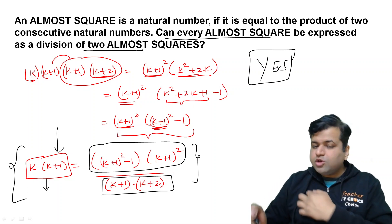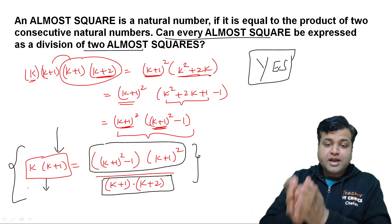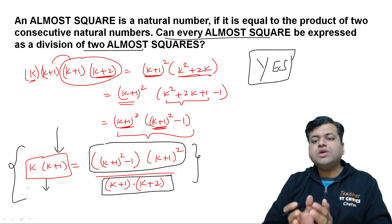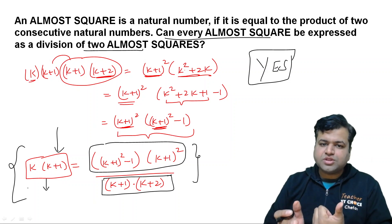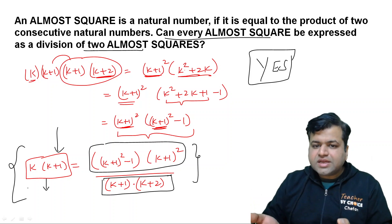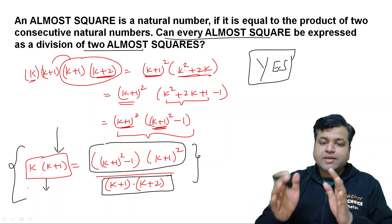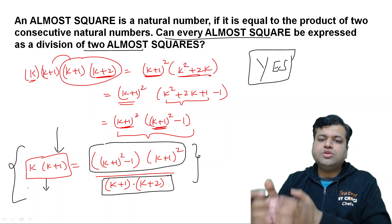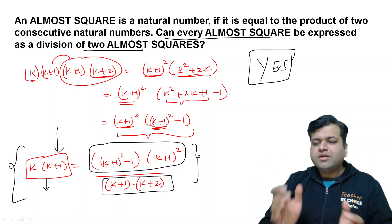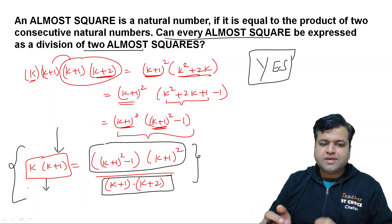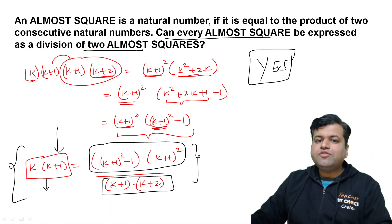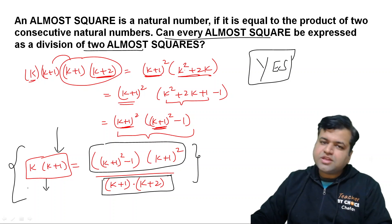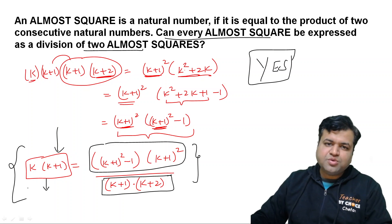This is clearly a general almost square, so the answer to the question — can every almost square be expressed as a division of two almost squares — is YES, and this is the way to do it. I hope the approach is clear. Within half an hour you will definitely get some hint and things will fall into place. This is the solution. I hope you all enjoyed it and understood it. We will meet tomorrow with a new question and a new concept. See you tomorrow — take good care of yourself, thank you, bye bye.